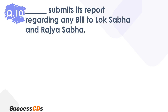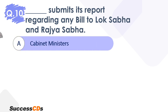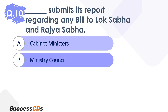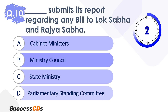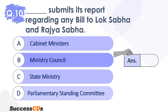Question 10. Dash submits its report regarding any bill to Lok Sabha and Rajya Sabha. Who submits its report regarding any bill to Lok Sabha and Rajya Sabha? Options: cabinet ministers, ministry council, state ministry, or parliamentary standing committee. Time begins now. The correct answer is the parliamentary standing committee. There are many committees in Parliament that perform various types of functions. One function of the parliamentary standing committee is to submit its bill or report to either Lok Sabha or Rajya Sabha, based on whatever bill it is. So the correct answer is option D.